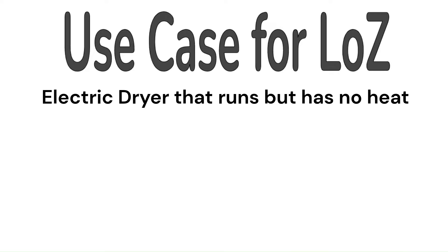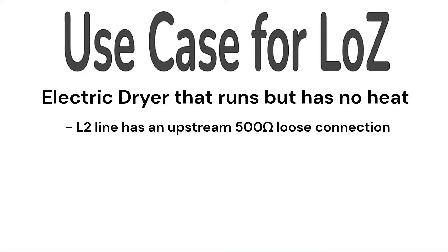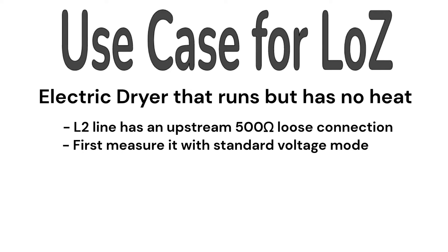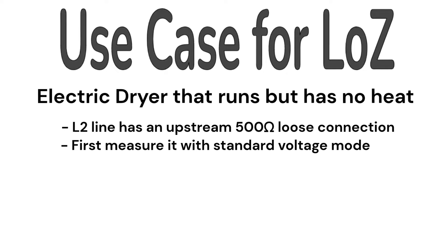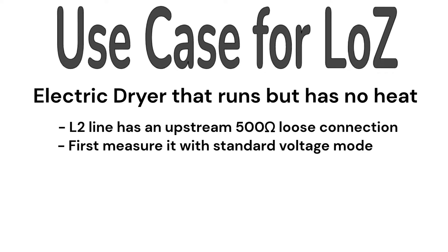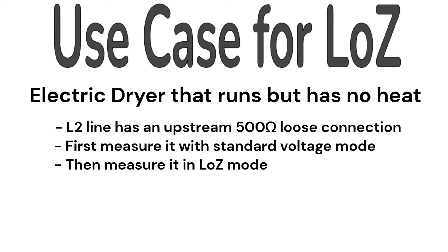Here's the use case for low Z. We have an electric dryer that runs, but has no heat. The L2 voltage line has a loose connection in an upstream junction box, in the order of about 500 ohms. We first measure it using the standard AC voltage mode, and then use the low Z mode to measure it.